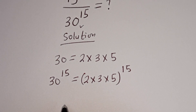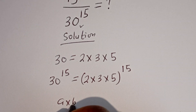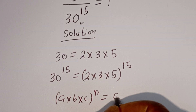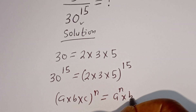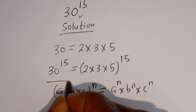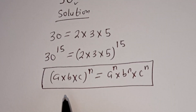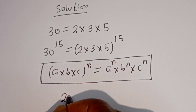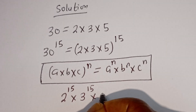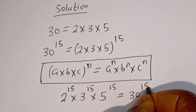Now take note of this: if you have A multiplied by B multiplied by C, all to the power of N, this is equal to A to the power of N multiplied by B to the power of N multiplied by C to the power of N. Therefore, this can be written as 2 to the power of 15 multiplied by 3 to the power of 15 multiplied by 5 to the power of 15, which is equal to 30 to the power of 15.